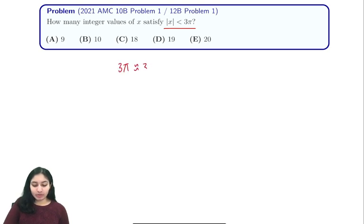So 3π is 3 times 3.14, so it's 9.4 something. We don't really care about the rest because we only want integer values, so we know that if x is going to be an integer, it has to be less than or equal to 9.